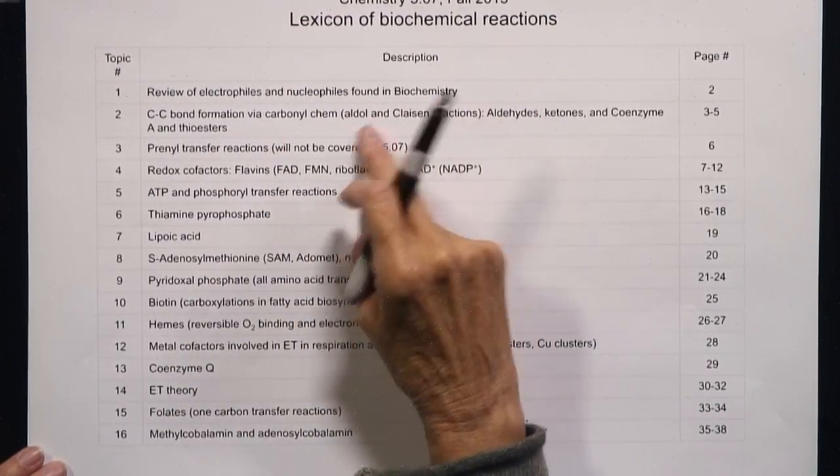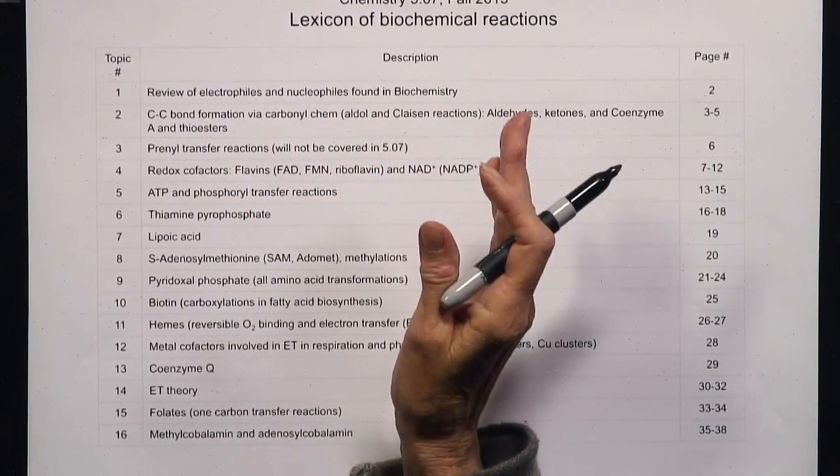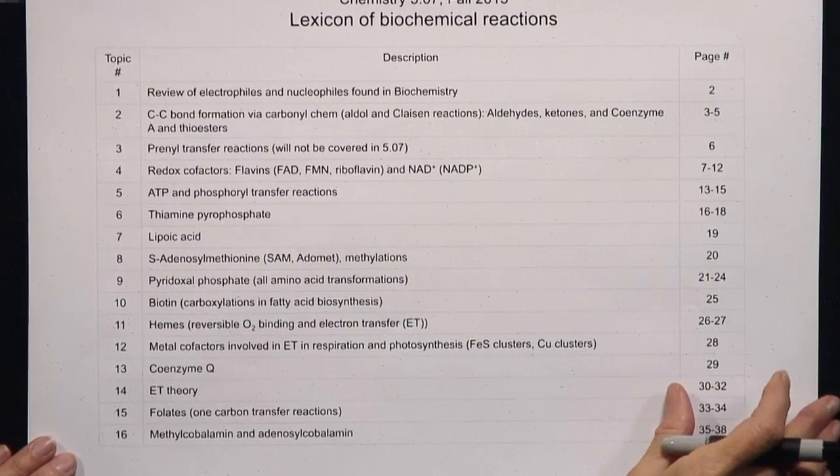What the lexicon is meant to do is be an aid when you can't remember what oxidation and reduction are — you can go back to your lexicon and look up what the redox cofactors involved in a transformation are. By practicing the chemistry in the first part of the semester, metabolism should be very straightforward. Hopefully you'll look through your lexicon tonight, see what these reactions are, and keep it by your side during the rest of the semester as a guide for understanding chemical transformations.